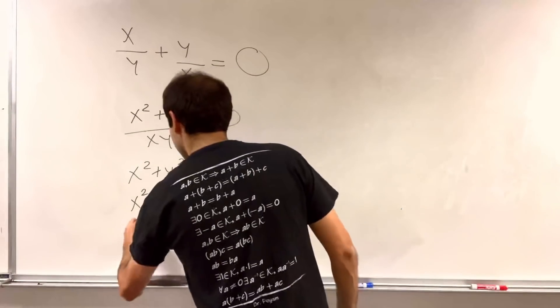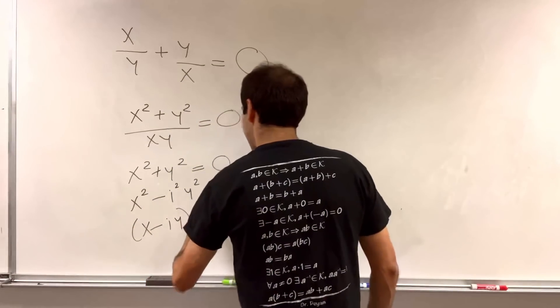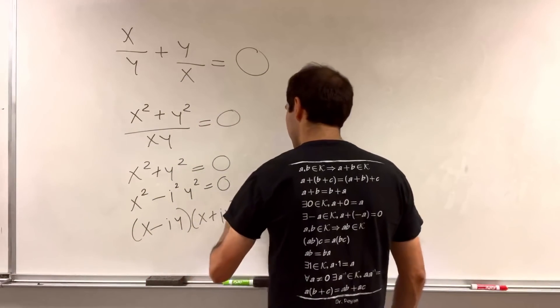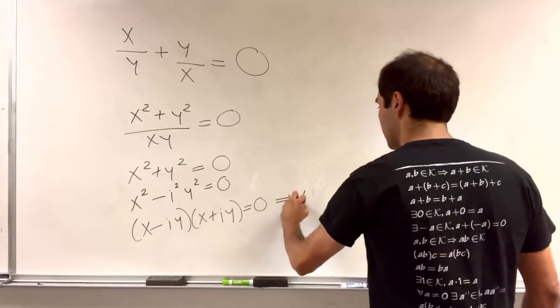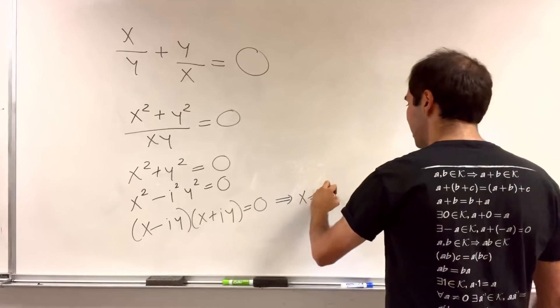So, x minus iy times x plus iy equals 0. And so, x is plus or minus iy.